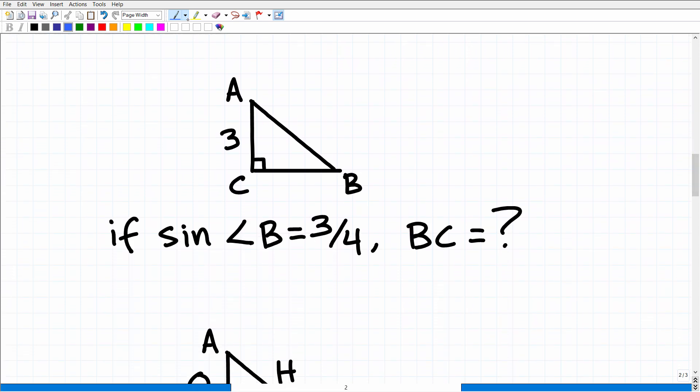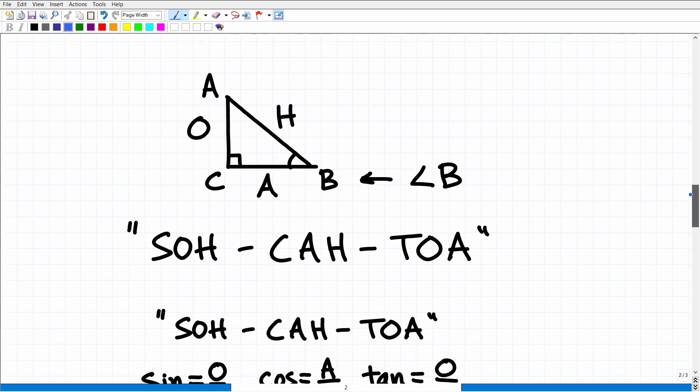All right, so what you're going to need to know is some basic right angle trigonometry. Okay, that's what we're talking about here. So if the sine of this angle right here, sine of angle B, is equal to 3 fourths, what is this length? Well, the sine, let me just write this up here. You got sine, cosine, and tangent. Now in trigonometry, we refer to these things, these trigonometric functions, as trigonometric ratios. Okay, a ratio of course is a fraction. Basically you're comparing two sides of this right triangle.